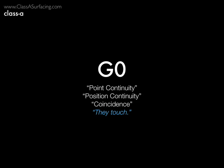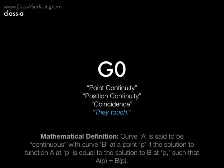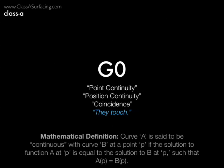That brings me to this illustration. Look at curves L and M — they don't touch at point P. This is not G0; there is no continuity between these two curves. Continuity starts at G0, which is referred to as point continuity. That means the two curves or surfaces in question touch. Mathematically, if you solve two different curves for the same X and Y, you get the same answer. Curve L is said to have G0 continuity with curve M because they touch.